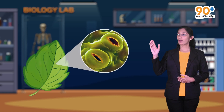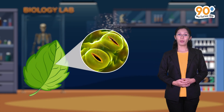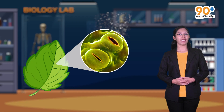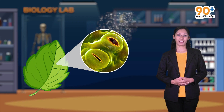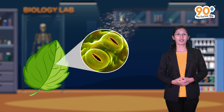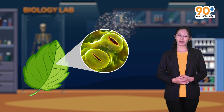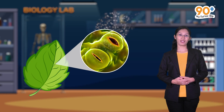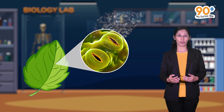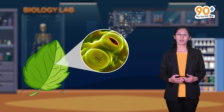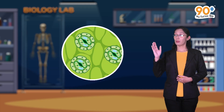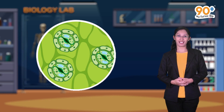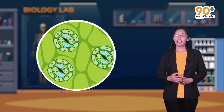We know that stomata are the microscopic pores found on the epidermis of leaves and young shoots. They help in the process of photosynthesis, respiration, and gas exchange, and they are also responsible for water loss through transpiration.